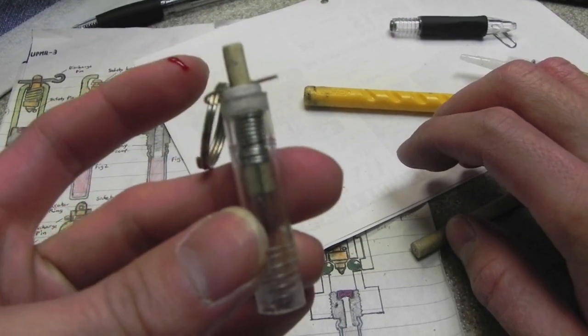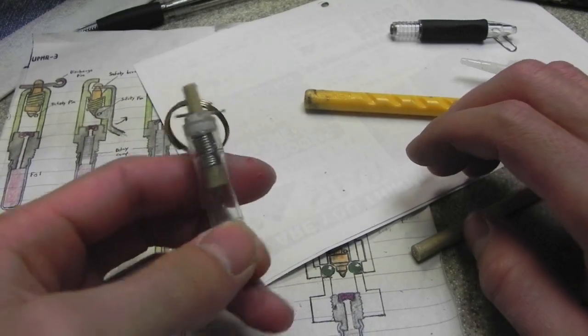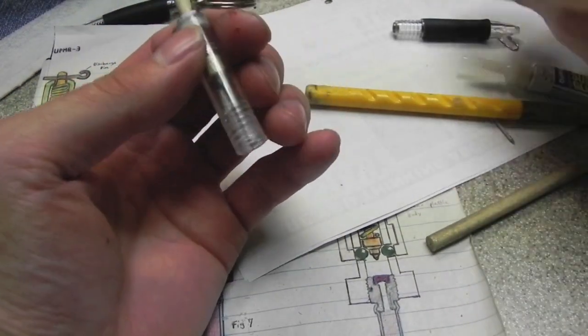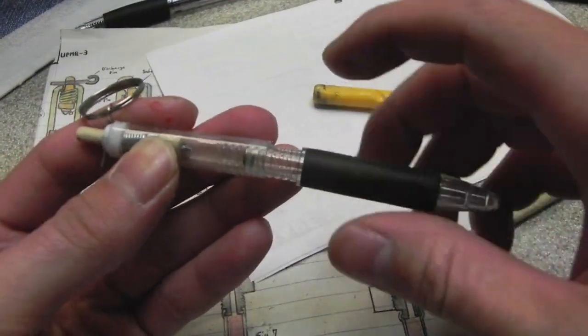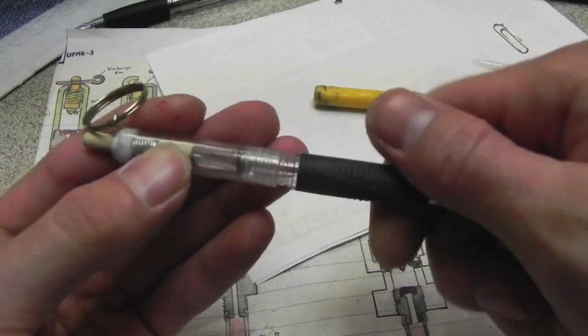And there you have it. There's your pull pin fuse. And now you have a primer and delay or whatever you have down here.